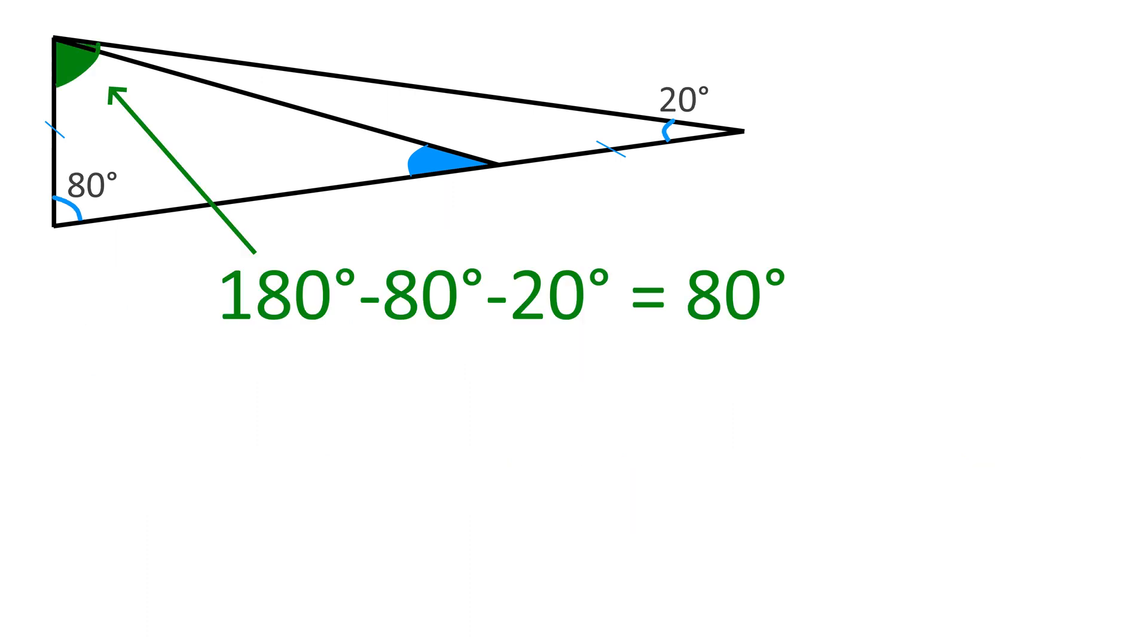First, this angle is 180 minus the two other known angles, giving 80 degrees. This means the big triangle is an isosceles triangle.